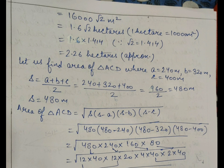Now let us find the area of triangle ACD where A is 240 meter, B is 320 meter, and C is 400 meter. We find the semi-perimeter using the formula A plus B plus C upon 2. After substituting the values, we get S as 480 meter. The area of triangle ACD will be found by the formula root S into S minus A into S minus B into S minus C.